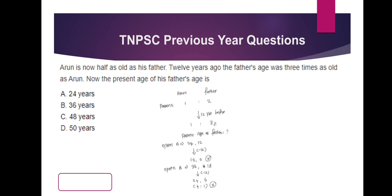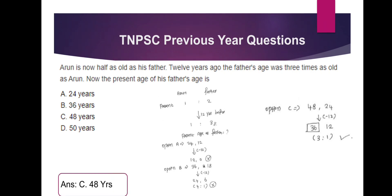Option B: father is 36 years old, Arun is 18 years old. For 12 years, the ratio is 24 to 6, which is 4 to 1 — not matching. Option C: father is 48. The ratio becomes 24 years for Arun and 12 years ago it's 12 years old. This ratio is 3 to 1. This is the answer — option C is the answer. The age of the father is 48.